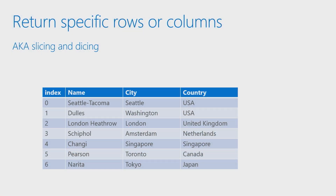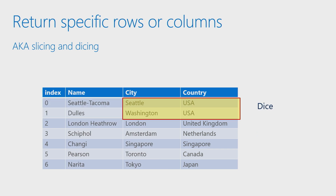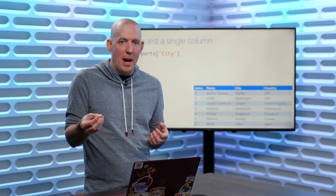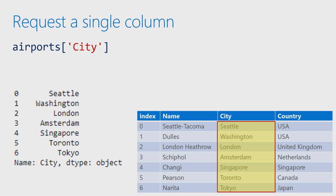Let's see how we can identify individual items or start slicing and dicing our data — grabbing specific rows and specific columns. One way we can do this is by grabbing a specific column, identifying it based on its name. The indexer for a DataFrame is going to, by default, be the name of the column. So if I say 'airport city', that's going to give us back everything inside of that city column as well as the index. So when I do that, I've got my city and the index to go along with that.